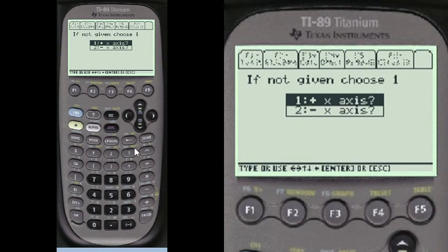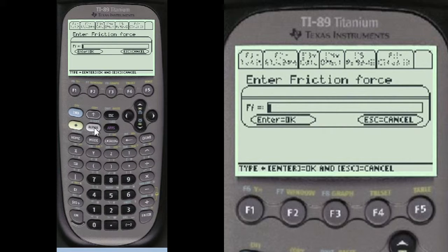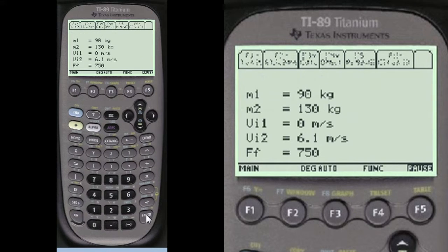If it's not given, we choose number 1 here. And we do have friction force involved, so we've got to choose number 2 there. Alpha 750 is what's given for the friction force.